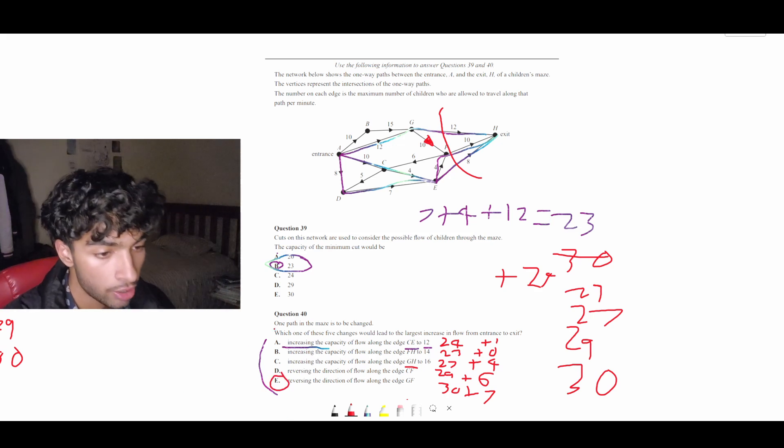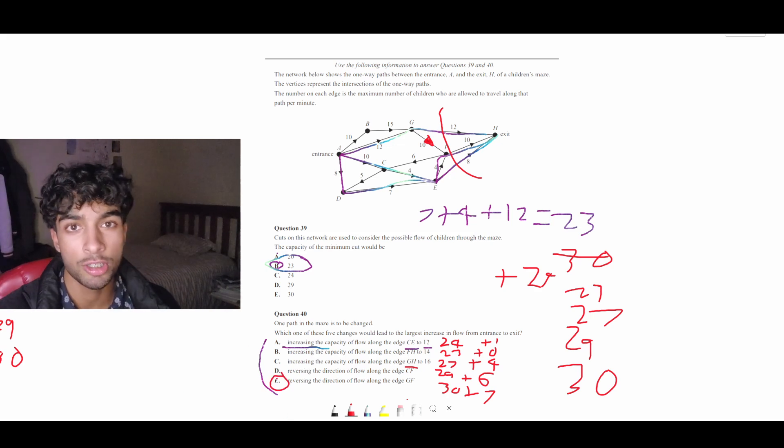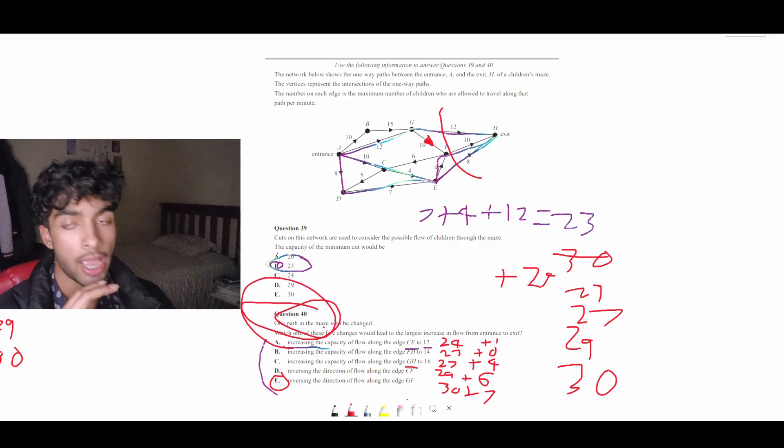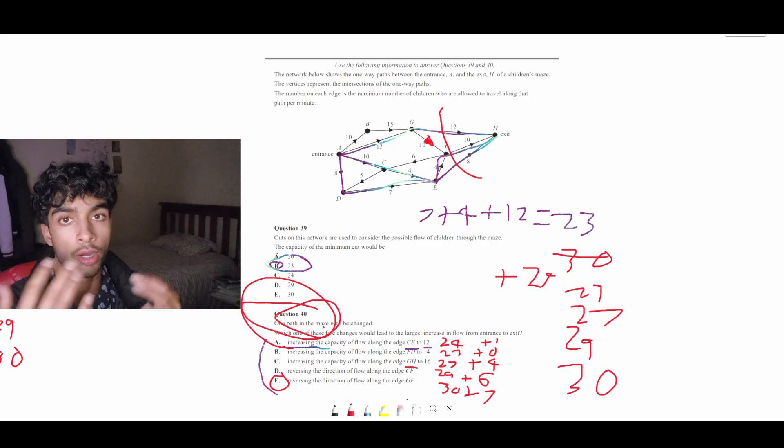And unfortunately, after doing trial and error, we get E, which is the last option, which means we took a long time. But the thing is, this was the last question on the exam. And usually they'll put all the hard questions at the end, which is pretty good for us.